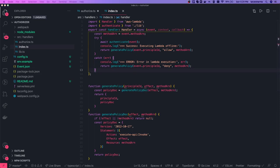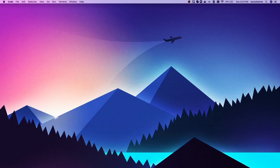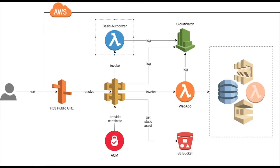Let's look at the diagram. After the authorizer lambda has validated the request, we are able to call the main lambda properly. The lambda will execute whatever is expected and give us the final response.